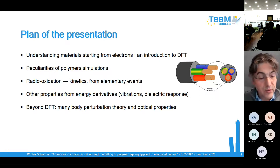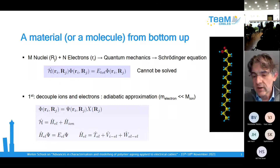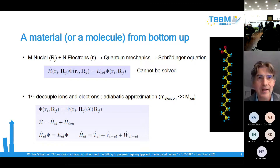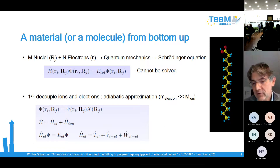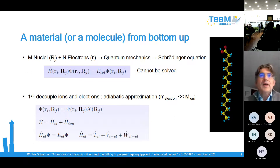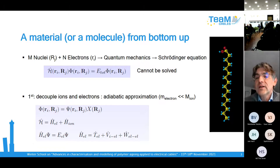Starting with a more general description of materials starting from the electrons — thank you for the introduction of molecular dynamics and the different length and time scales associated to different methods. Here we start from electrons, not simply from atoms as balls interacting with empirical potentials. We want to describe the interaction between different atoms starting from the electrons, and for this we need to rely on quantum mechanics.